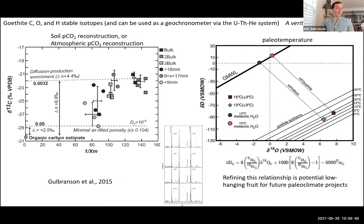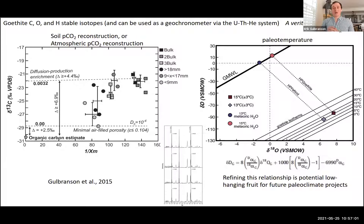We might also use iron oxide minerals like goethite — with three different stable isotope systems available. We can also radiometrically date goethite using the uranium-thorium-helium system, basically a one-stop shop for paleoclimate. Looking at stable hydrogen and oxygen isotopes from the Moscovian of Argentina showcases, as John mentioned, a change in orographic effects on paleo-rainfall in that part of Gondwana.